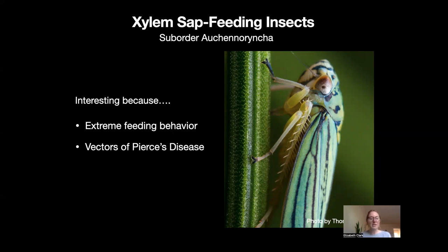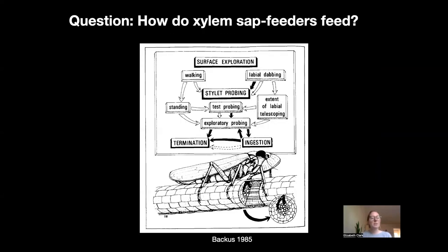There's a lot we don't understand about the physics of feeding and, as a result, transmission of Xylella, because feeding and pathogen transmission happen internally. These insects have needle-like mouthparts that they insert into the plant's vascular tissue to extract xylem sap, so we can't directly observe what's going on inside during feeding.